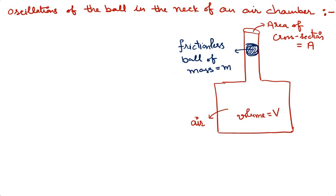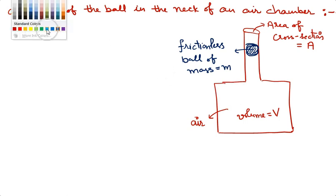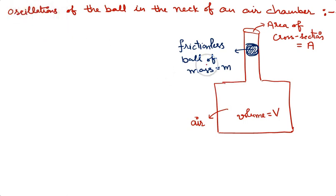Now pressure inside air chamber is atmospheric pressure and pressure outside air chamber is also atmospheric pressure. In other words, pressure on both sides of the ball is equal P atmospheric. This means right now system is in equilibrium.